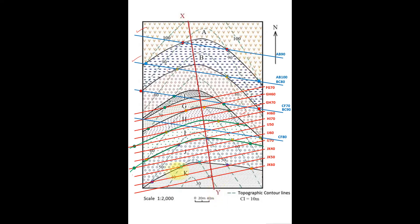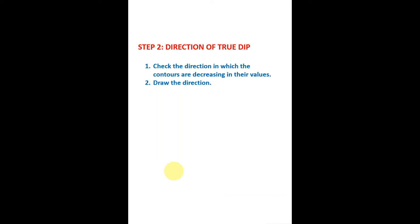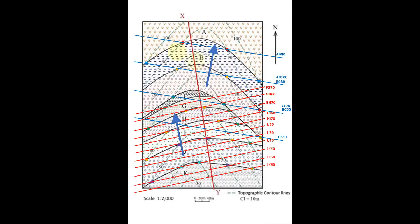Step 2 is determining the direction of true dip. We check the direction in which contour values decrease and draw dip arrows perpendicular to the strike lines. There are two dip directions because the spacing between strike lines is increasing and the two sets of lines face different directions — the blue northern set dips one way and the red southern set dips another way, with different dip values.